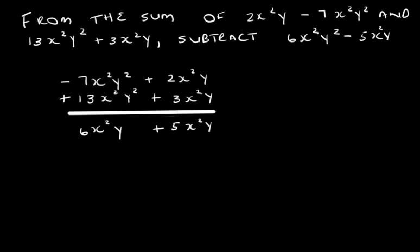Using the vertical column method: positive 2x squared y plus 3x squared y gives 5x squared y, and minus 7x squared y squared plus 13x squared y squared gives 6x squared y squared.